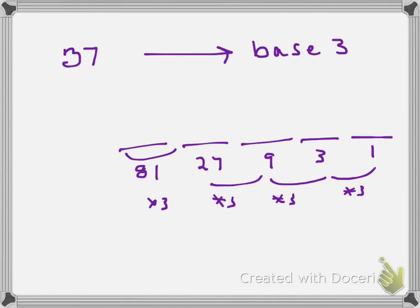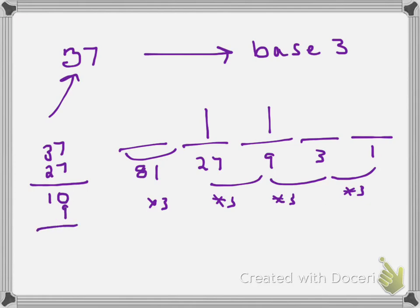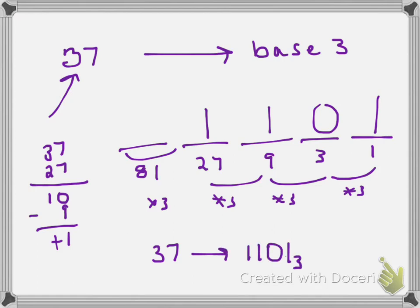I ask myself: what's the largest power of 3 that goes into 37? It's 27, and I can only have one of those. So I take 37 minus 27, which is 10. Now I look at my remaining places — can I put a 9 into that 10? Sure. Subtract again and I have 1. So no 3s and 1 one. So 37 in our notation is the same thing as 1, 1, 0, 1 in base 3.